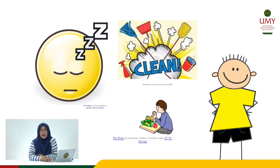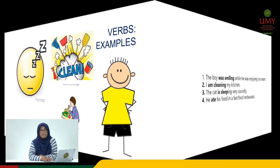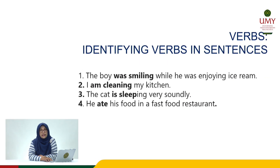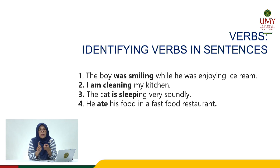Dear students, you can see that these illustrations represent verbs such as smile, clean, sleeping, and eating. From these examples we know that there are various types of verbs. Let's now identify verbs in sentences. Here are examples of verbs in sentences — can you guess which ones are the verbs? Yes, you're right. The verbs are identified by the bold text in the sentences.